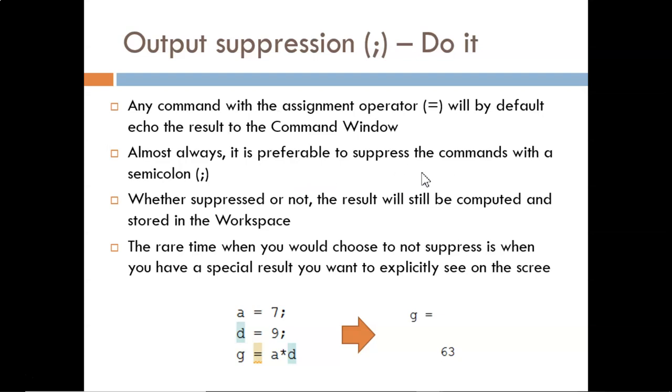Whether you suppress it or not, the results are stored in memory, shown in the workspace. In this example, a and d must have been stored properly in memory because the computation of g is correct. The rare exception of when you might actually want to leave an output unsuppressed is when there is a special result that you want to see displayed. To reemphasize, this only applies to those commands with an assignment operator included.